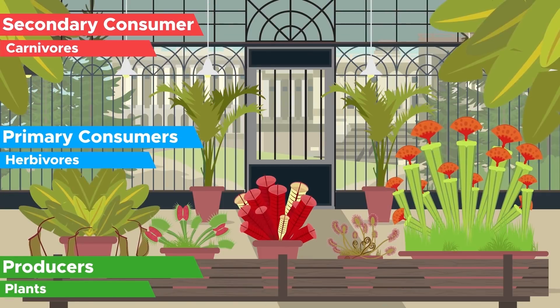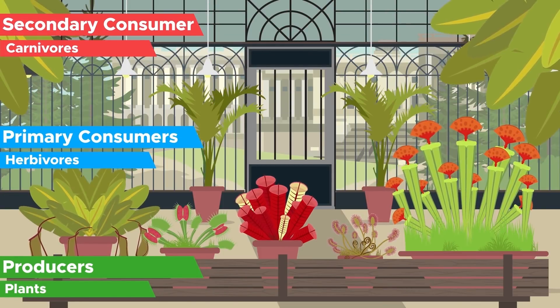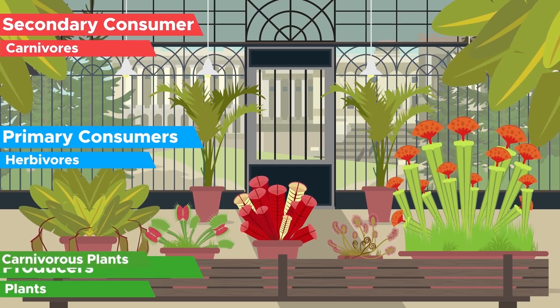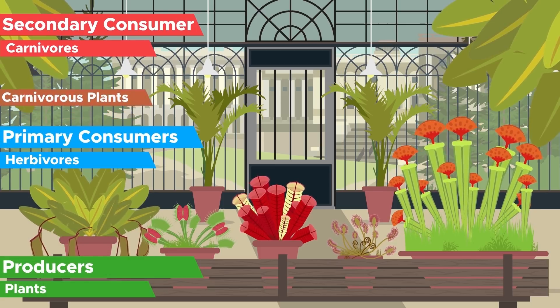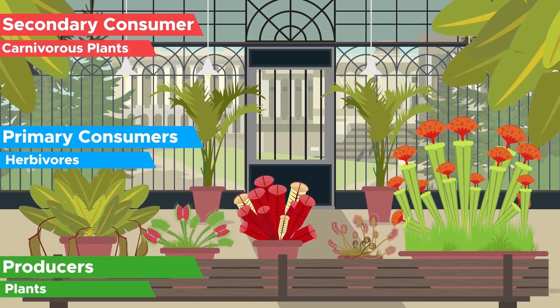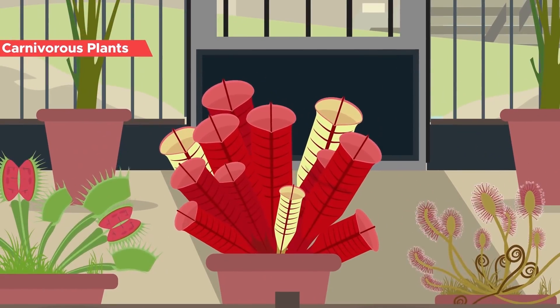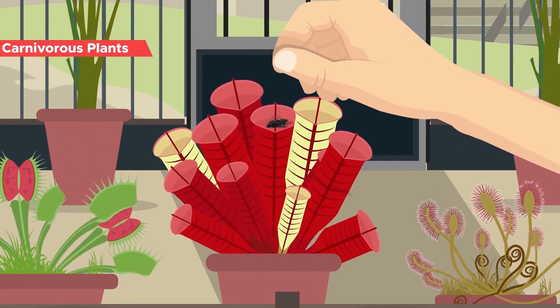The more surprising is it that one group of plants managed to evolve tools that allowed them to break away from the bottom of the food chain and become carnivores themselves. They are no longer the food of animals, instead animals became their food.